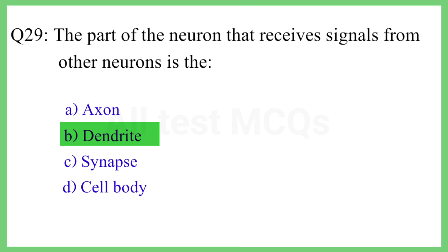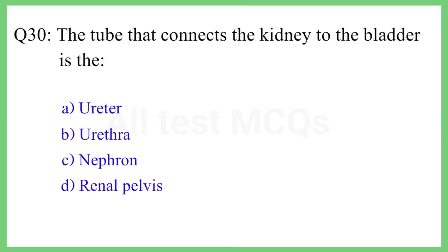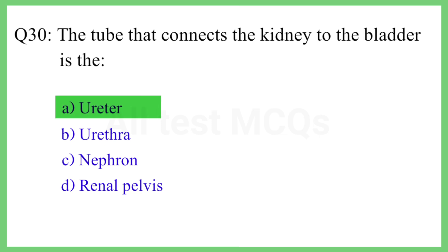Question No. 30. The tube that connects the kidney to the bladder is the? The correct answer is Option A: Ureter.